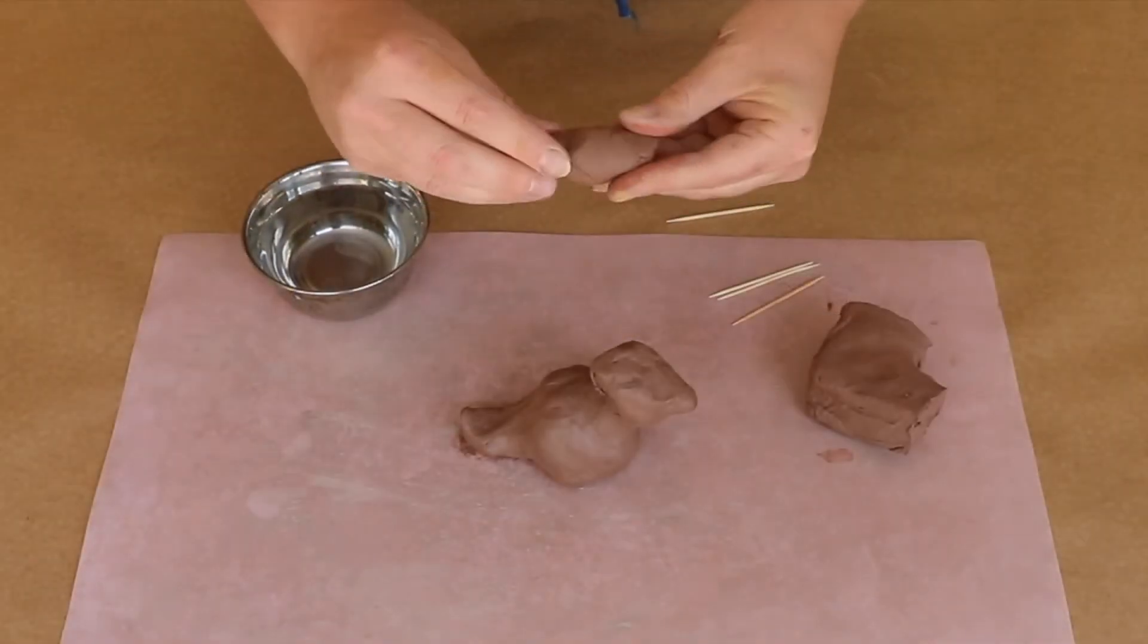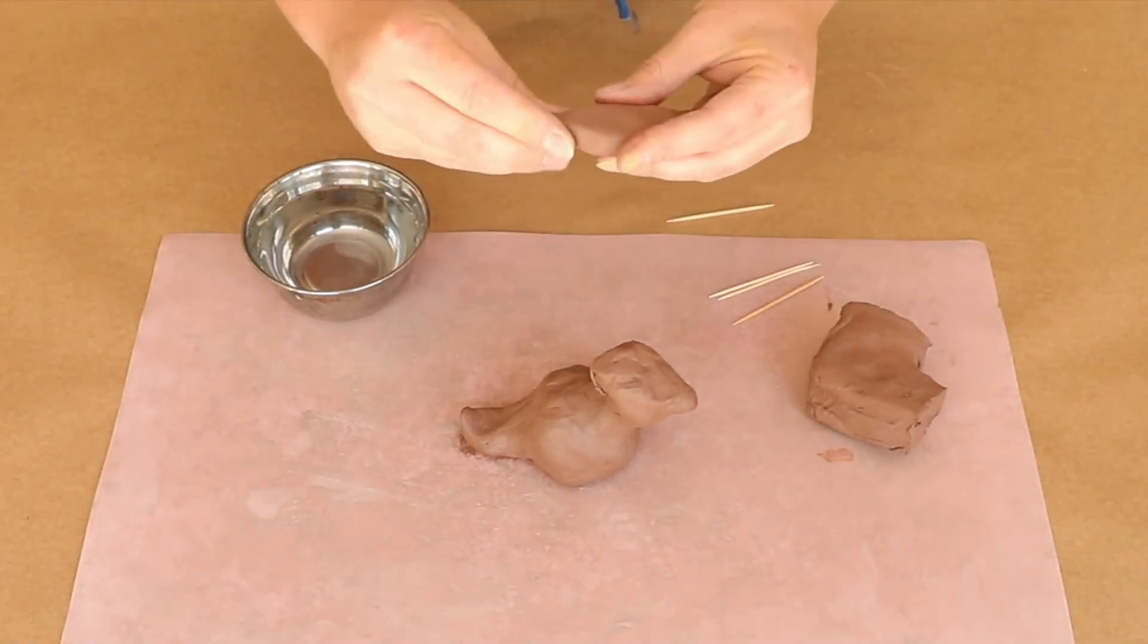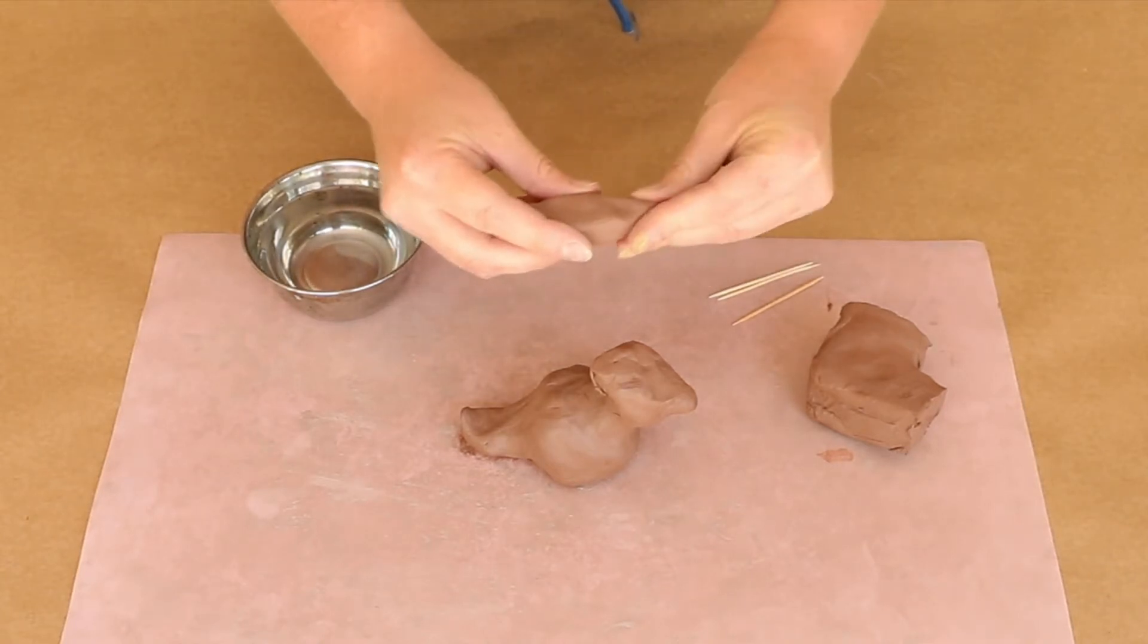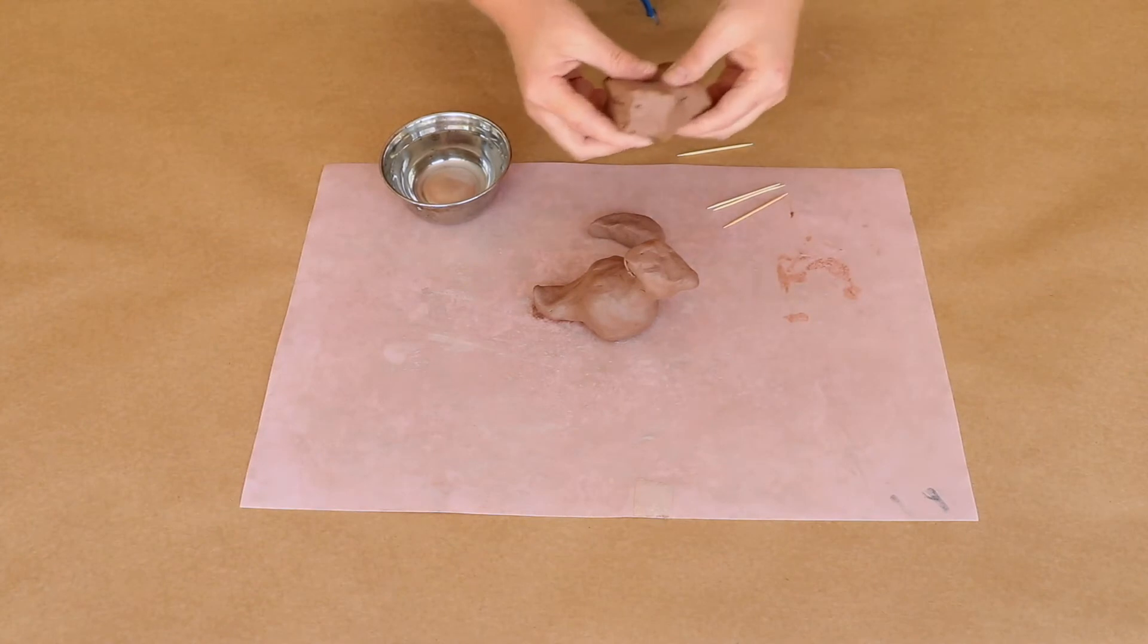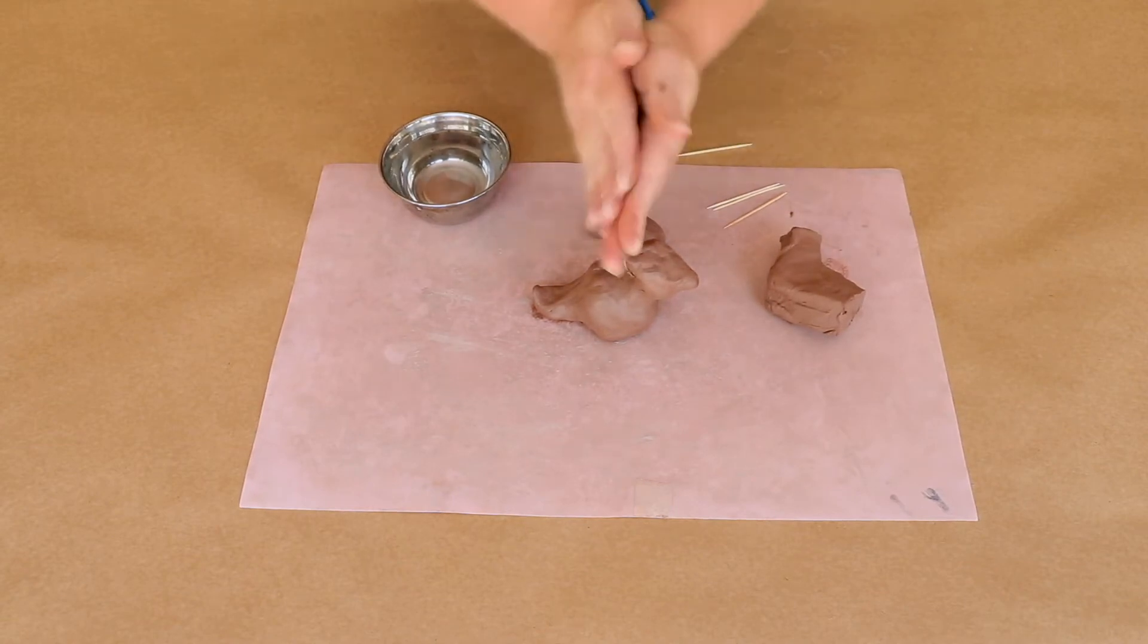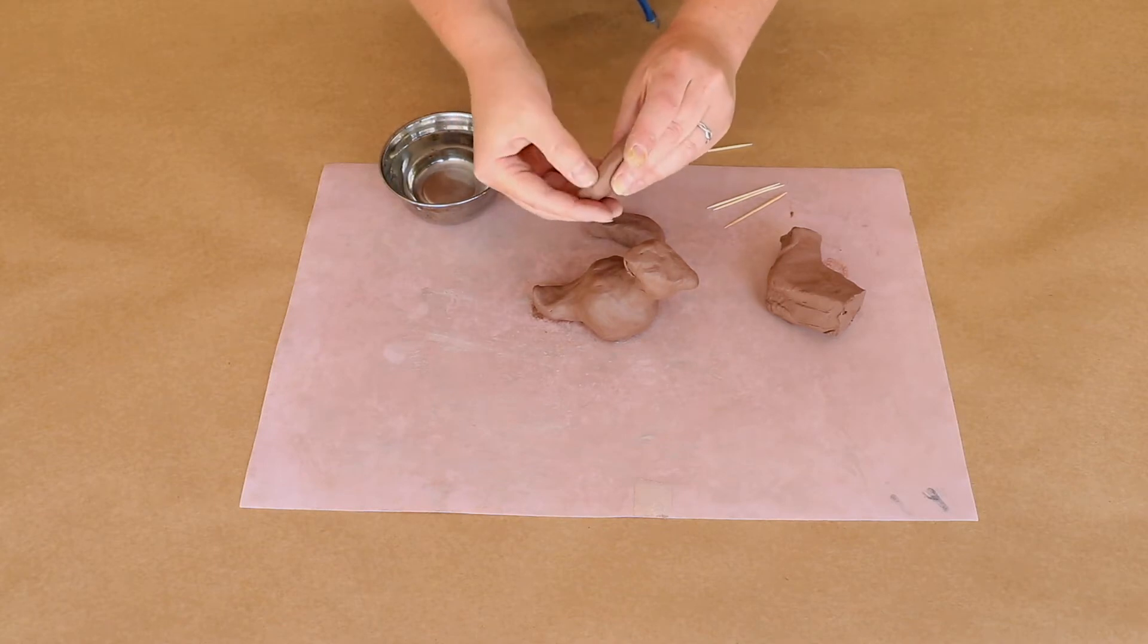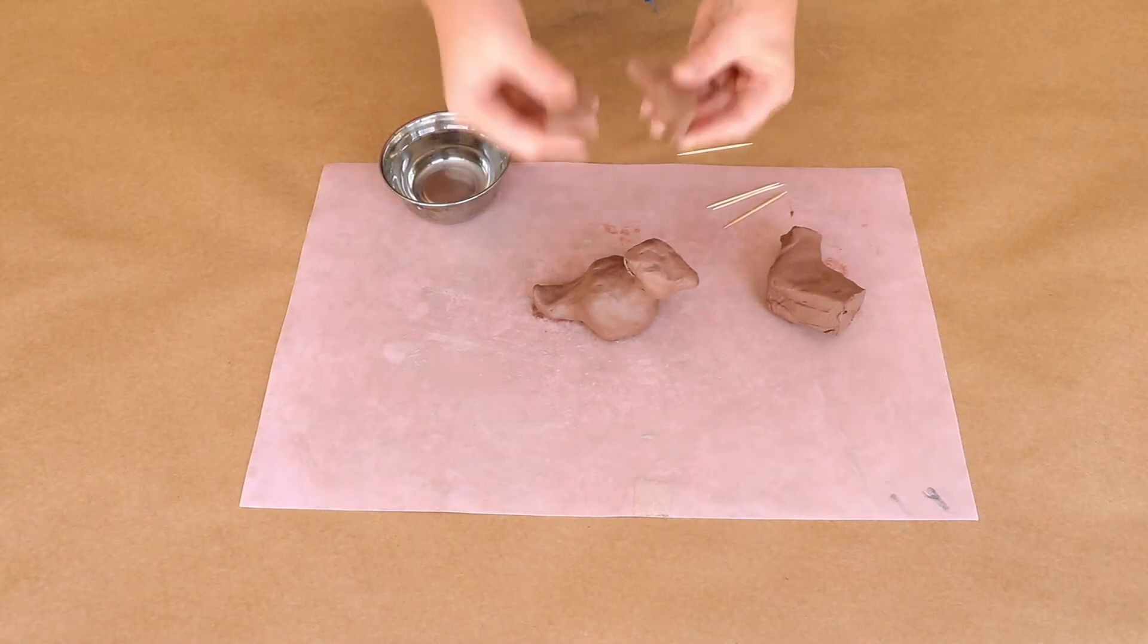Flatten it out a bit, almost like a leaf shape. Remember, not too skinny. There's one flipper. And then I'm just going to keep doing that. I want another one in the front, so I'm going to peel off about the same size. Roll it and pinch it. And don't forget to smooth all those cracks out. So now I have two flippers for the front.